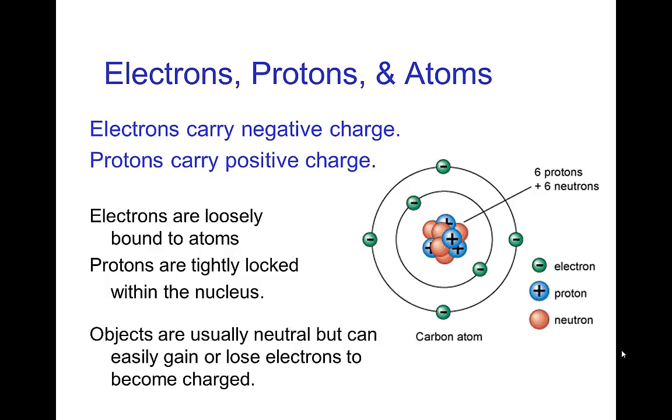Now, the fundamental origin of these charges are that the particles that make up atoms have charges. There's the electrons which have negative charge and the protons in the nucleus that have positive charge. And the electrons are often loosely bound to the atoms and so they can move around. Now, objects normally have an equal number of electrons as protons in their atoms, and so in general things are neutral.